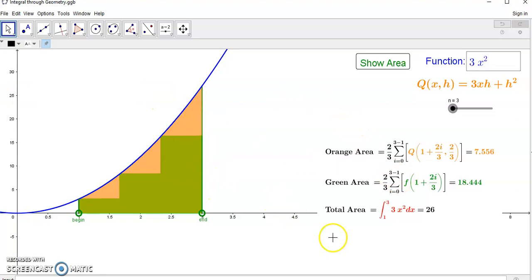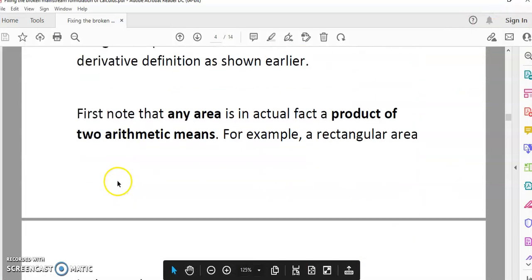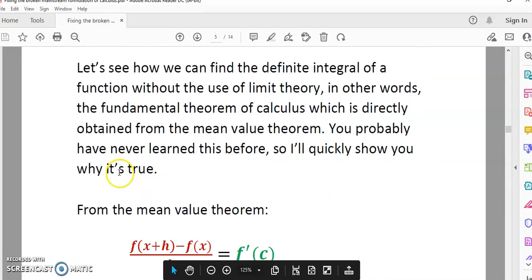Okay, so I'll put a link to this applet which you can download, and I'll explain to you how you can change these parameters so that you can see it work with any other function. In other words, it doesn't just work for a particular function, it works for any smooth function.